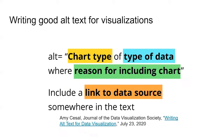When writing alternative text or alt text, be sure to make it descriptive. Cover the type of chart, the type of data, and why that data is being included in the chart. Be sure to include a link to the data source somewhere in the text of the visualization. While this might seem a bit formulaic, it covers the key parts of a chart that need to be communicated to have the basic parts of it understood.